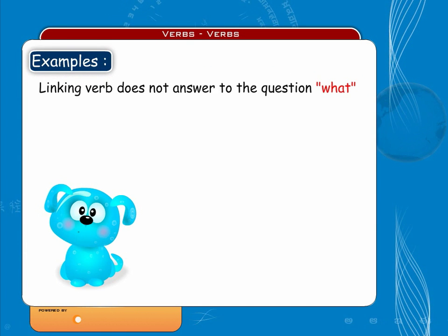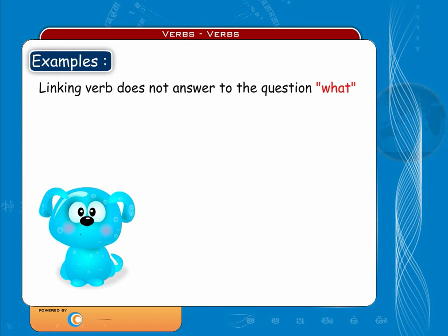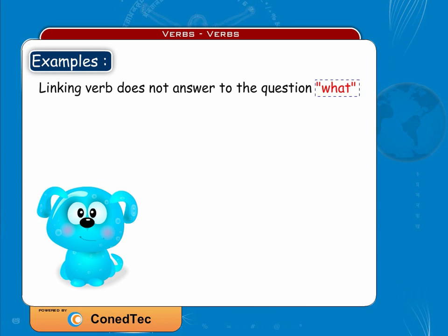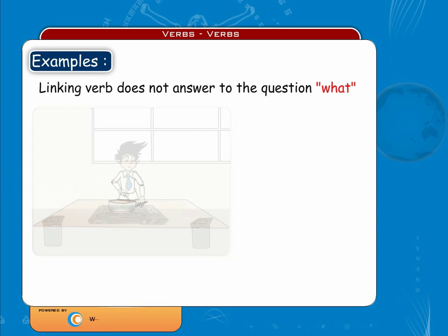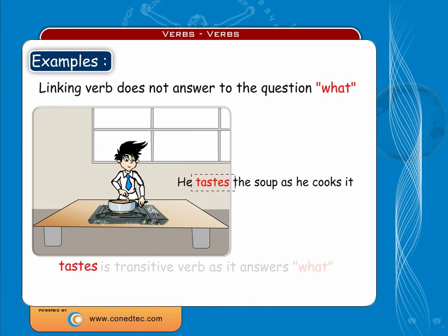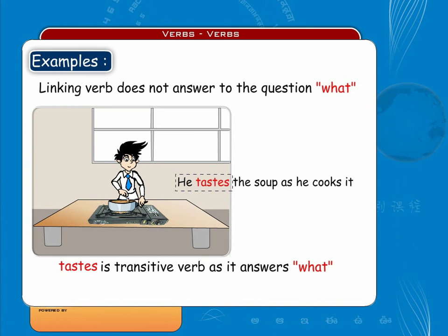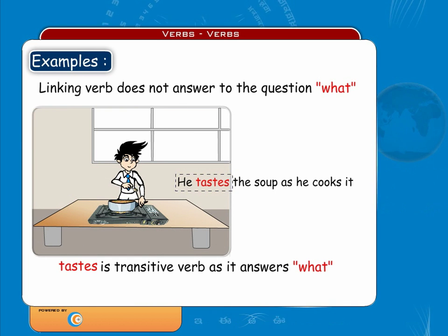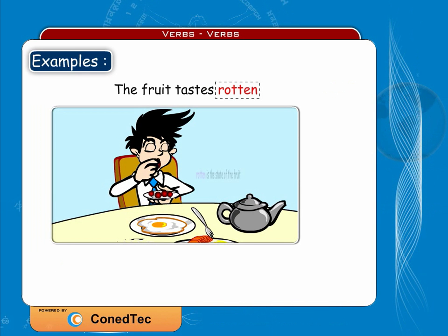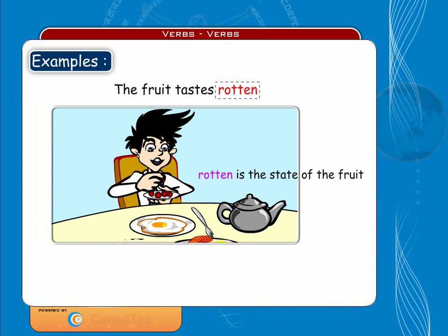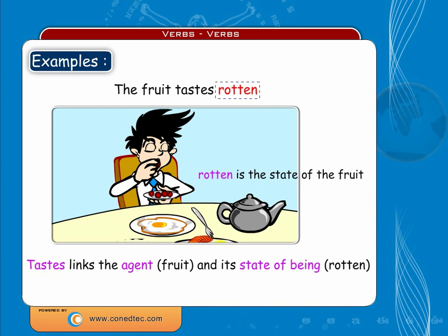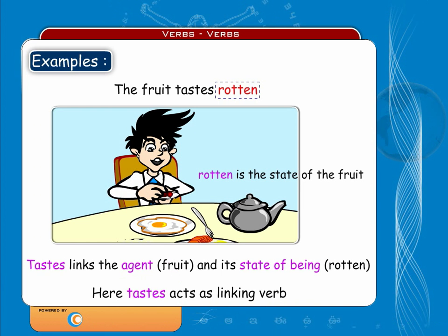Remember: if what follows the verb can answer the question 'what,' then the verb is not a linking verb. For example, 'He tastes the soup as he cooks it' — 'taste' is a transitive verb, because 'he tastes what.' But in 'The fruit tastes rotten,' 'rotten' describes the state of the fruit, and therefore 'tastes' links the subject 'fruit' with its condition 'rotten,' making it a linking verb.